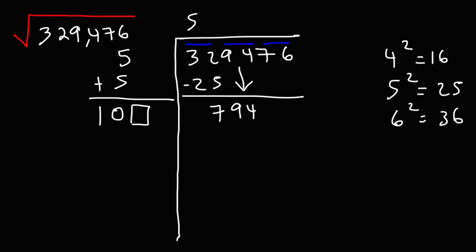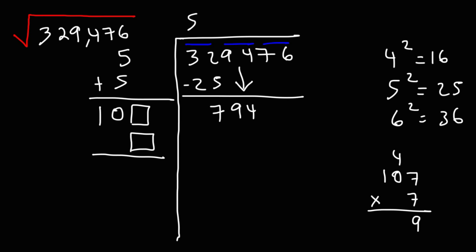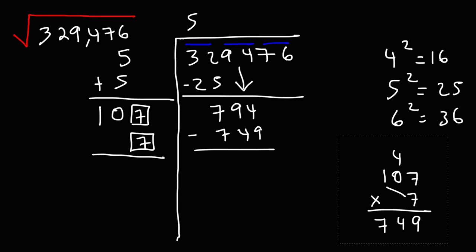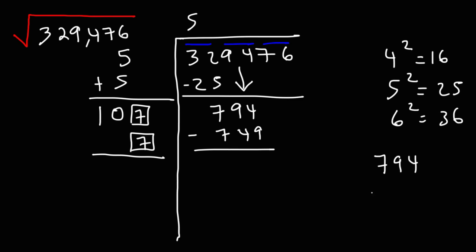100-something times something is close to but less than 794. It can't be 8, because 108 times 8 is going to be more than 800. So the best number to pick is 7. 107 times 7: 7 times 7 is 49, carry the 4; 7 times 0 is 0 plus 4 is 4; 7 times 1 is 7. So 107 times 7 gives us 749. Subtracting: 794 minus 749 — borrow a 1, the 9 becomes 8, the 4 becomes 14; 14 minus 9 is 5, 8 minus 4 is 4, the 7s cancel. This gives us 45.